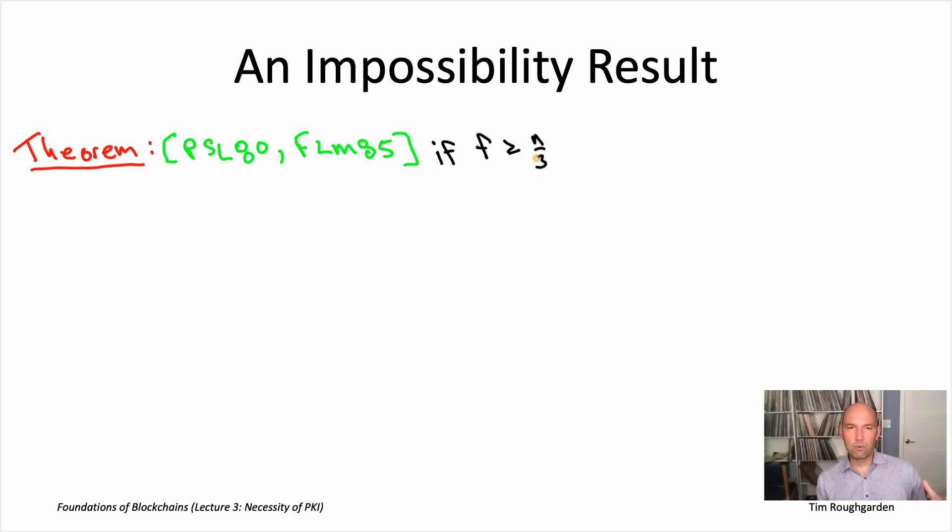Remember, n denotes the total number of nodes participating in the protocol. Little f is our upper bound on how many Byzantine nodes we're trying to protect against. So f at least n over three - that says if it's the case that at least a third of the nodes really are faulty, really are Byzantine. And in that case, this impossibility result will rule out a correct solution to the Byzantine broadcast problem.